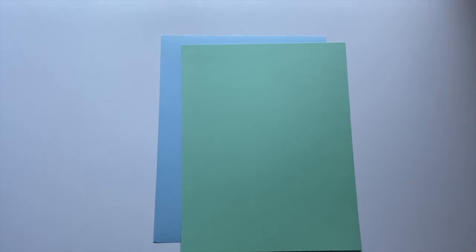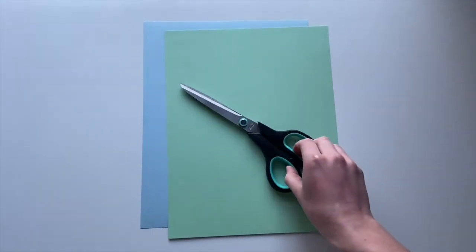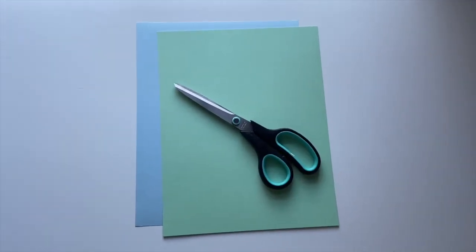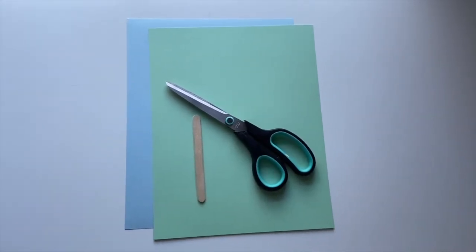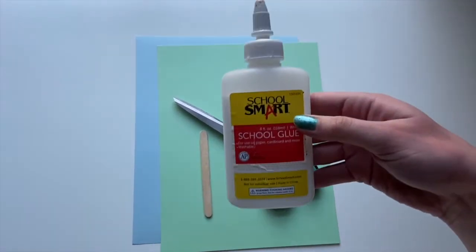To make your rocking boat you are going to need a blue piece of cardstock paper, another piece of cardstock paper any color of your choosing, a pair of scissors, one popsicle stick, and some glue.